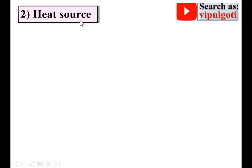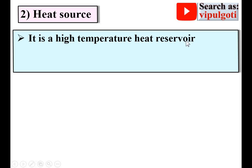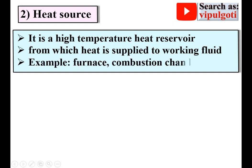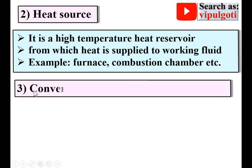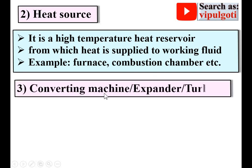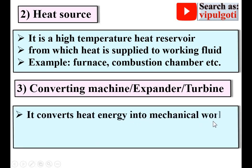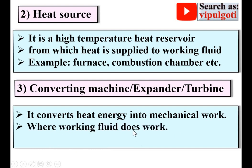The second essential component is the heat source. It is a high-temperature heat reservoir — that means a storage of heat from which heat is supplied to the working fluid. Examples include a furnace and combustion chamber. The third component is the converting machine — expander or turbine — which converts heat energy into mechanical work, where the working fluid does work. Example: steam turbine.